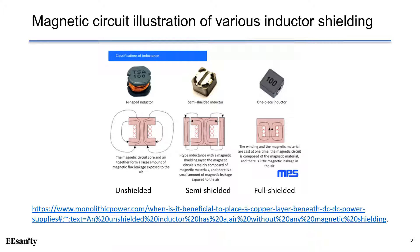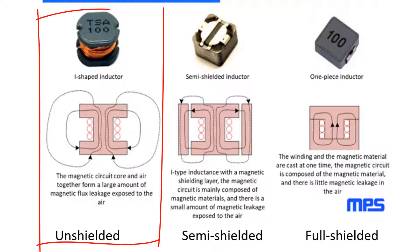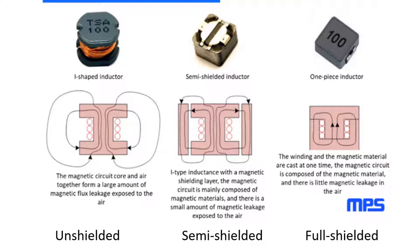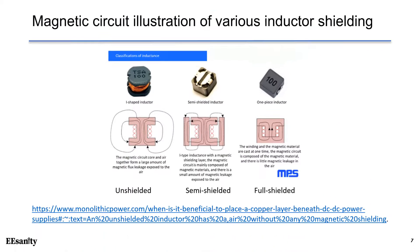To further illustrate different types of magnetic shielding, let's look at this slide from MPS. There are three different cross-sections shown: unshielded, semi-shielded, and fully shielded inductors. From this illustration, you can tell that the unshielded inductor has a large amount of magnetic flux leakage exposed to the air, while the fully shielded inductor has minimal flux leakage, which is best for EMI performance.